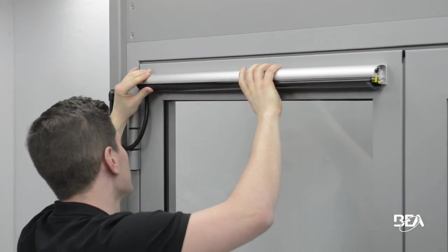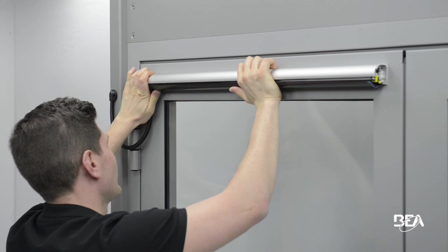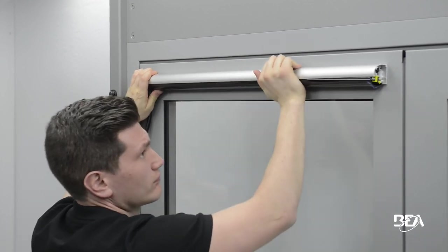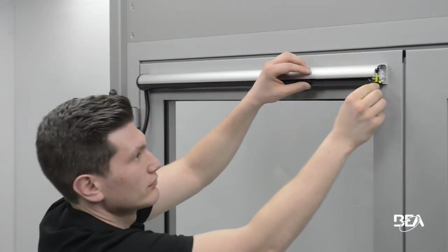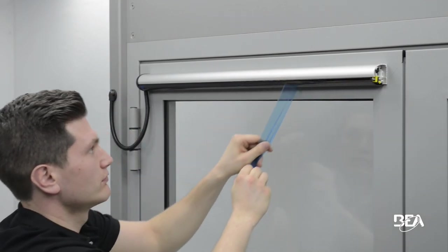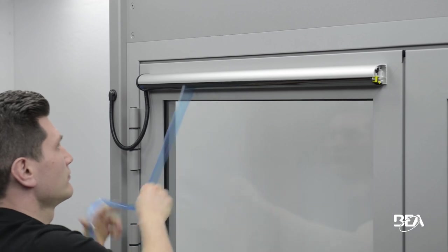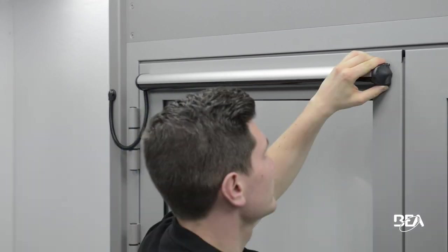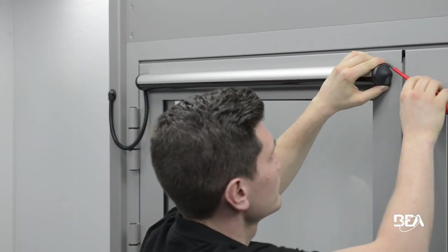Place the front face back on the profile. You can now remove the protection film from the front face. Place the second end cap and tighten the fixation screw.